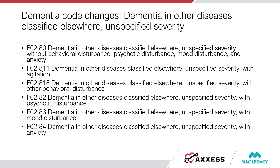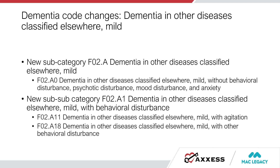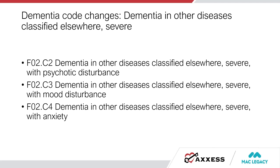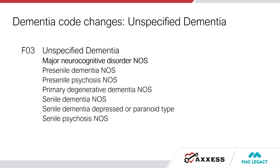For dementia in other diseases classified elsewhere, note there is no category for unspecified disturbances. If we know the patient has behavioral disturbances, we'll need clarification of what those are — there is no code for 'unspecified disturbances.' Under unspecified dementia, they've also listed 'major neurocognitive disorder, not otherwise specified,' which was added. Unspecified dementia can be primary in home care, but not in hospice.